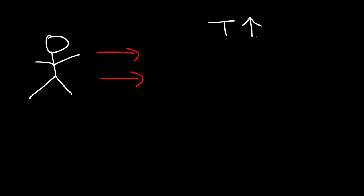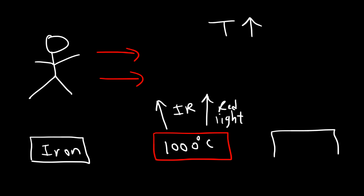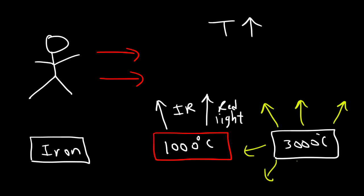Even we emit radiation — in the form of infrared rays. As you increase the temperature of an object, the radiation level increases. For example, if you heat iron metal to around 900–1000 degrees Celsius, it will appear red hot and emit infrared waves and even red light. Increase the temperature further to about 3000 degrees Celsius and the object will emit visible white light — it appears white hot. So as temperature increases, the amount of radiation emitted increases.